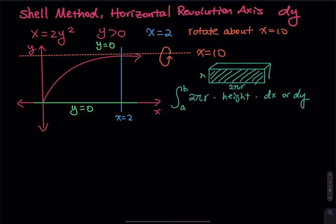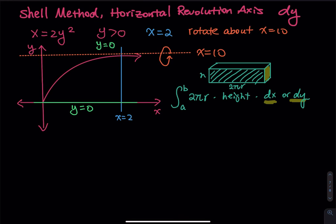So now this is three-dimensional. Once you consider the dx or dy, then you will consider the thickness. This thickness is either dx or dy. So when you do that, you have a 3D object. First of all, how do we find the radius?